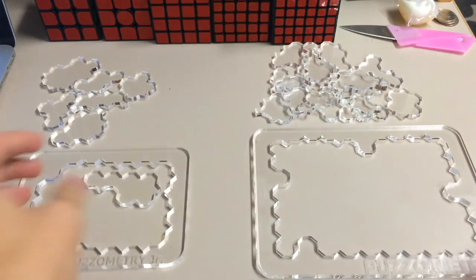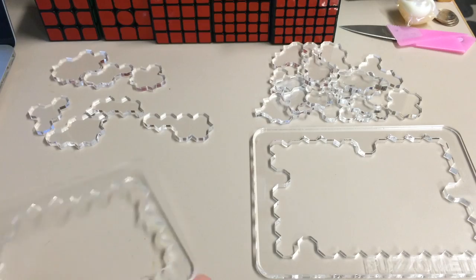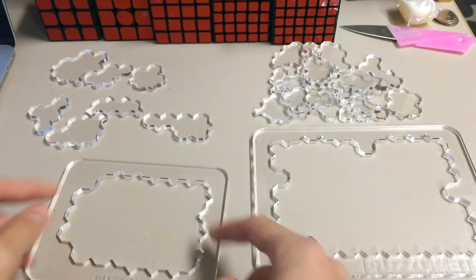And so what it is, is in the Junior, you have seven pieces, so one, two, three, four, five, six, seven, and you try and fit it into this outer frame.